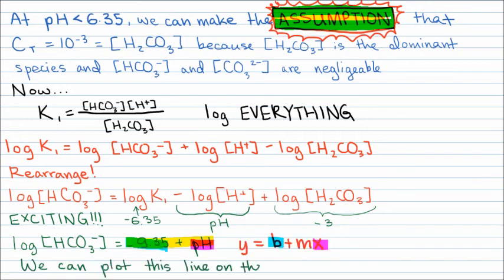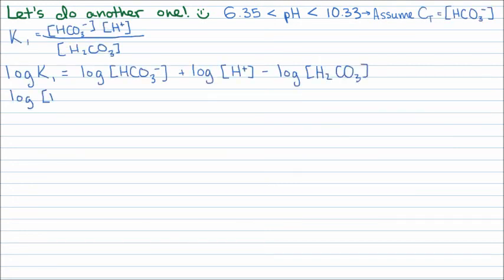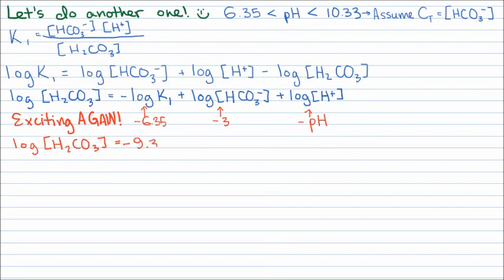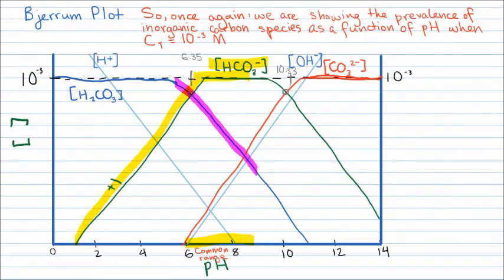Let's plot this line on the Bjerrum plot — note that the slope is positive 1. Let's try another line. At pH values between 6.35 and 10.33, bicarbonate ion dominates, so we assume it equals 10 to the negative 3 molar. Once again, we log everything and rearrange. Negative log K1 equals negative 6.35, log of bicarbonate ion concentration equals negative 3, and log of protons is negative pH. Therefore, the log of the carbonic acid concentration is equal to negative 9.35 minus pH — another line equation, but with a slope of negative 1. And we can plot it again on the Bjerrum plot.